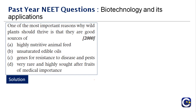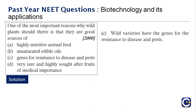Wild plants are exposed to a lot of changes and harsh conditions — no water, no proper sunlight, no proper food — so they develop resistance. Unlike pampered house plants, wild plants face every kind of situation. Their genes for resistance to disease and pest are highly valuable. Therefore the right answer is option C.